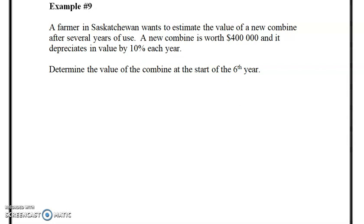Hi everybody, welcome back. This should be our last video for 1.3 Geometric Sequence. We're going to look at example 9. A farmer in Saskatchewan wants to estimate the value of a new combine after several years of use. A new combine is worth $400,000 and it depreciates by a value of 10% each year.